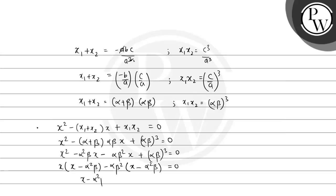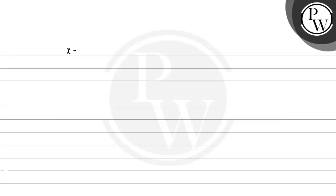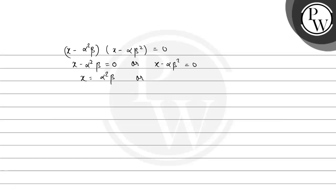Now factoring: (x − alpha²·beta)(x − alpha·beta²) = 0. So x − alpha²·beta = 0 or x − alpha·beta² = 0, giving x = alpha²·beta or x = alpha·beta². Therefore, the roots are alpha²·beta and alpha·beta².